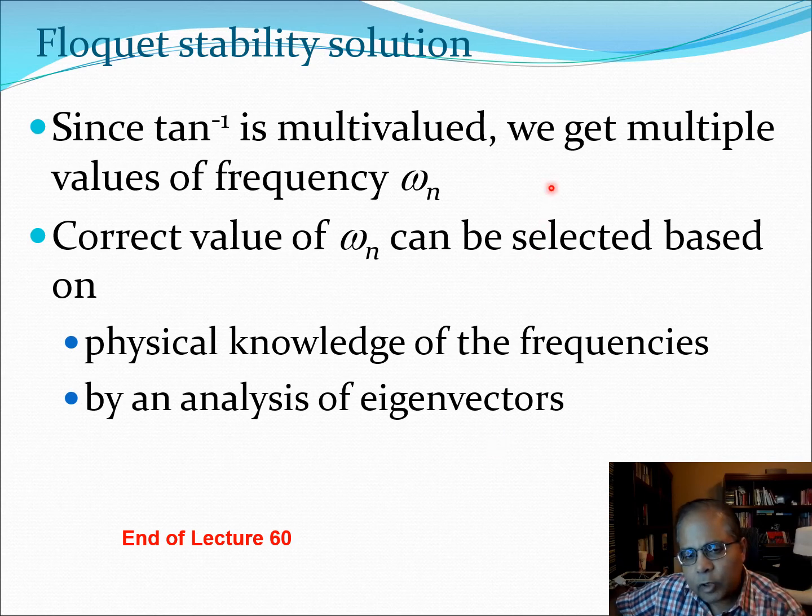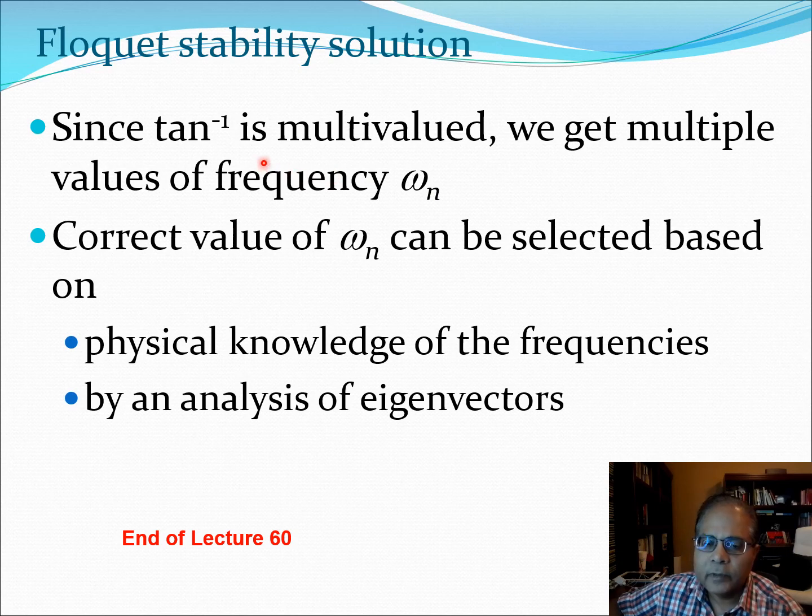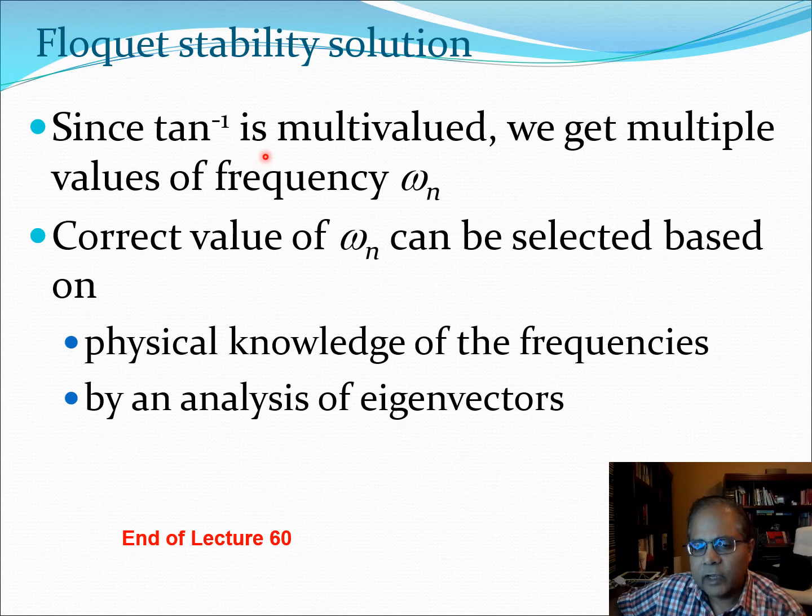Now, what would happen is that you probably know from trigonometry that whenever you take the inverse of a function such as tan, there are going to be many values. And this is a thing which comes out in all sinusoidal type functions and trigonometric functions and so on. Because of this multivalued nature, you would actually get many possible solutions in terms of the frequency of the system. If you want to get the correct value of this frequency, you can get it based on the physical knowledge of the frequency. For example, if you are dealing with the helicopter problem, we can figure out which is the fifth mode, which is the first lag mode, which is the second torsion mode and so on. And we can think about these frequencies being the stable frequencies or the unstable frequencies because engineers don't just like to know that the system is unstable. They like to know which particular mode is causing the instability so they can go and add more damping to that mode and mitigate that instability problem.